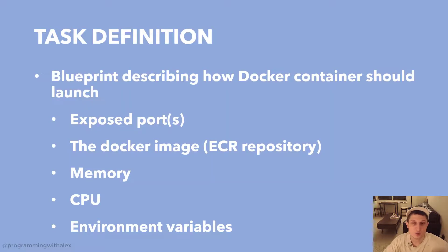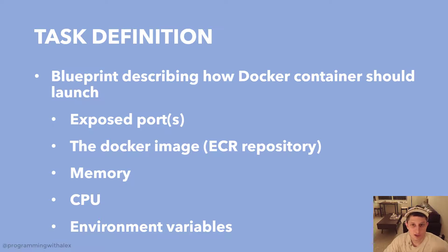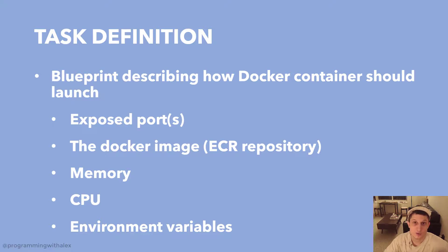Now let's walk through the components. We start with the task definition — what is it exactly? The task definition is the blueprint describing how the Docker container should run on our EC2 instance. We specify things like exposed ports: do we want to allow access on HTTP/HTTPS, port 80, port 443, do we allow SSH on port 22. We also specify where we're going to pull the Docker image from — we're set up with an ECR repository, so we specify that, or if you're pulling from Docker Hub you'd specify that. It also specifies memory, CPU, and environment variables.